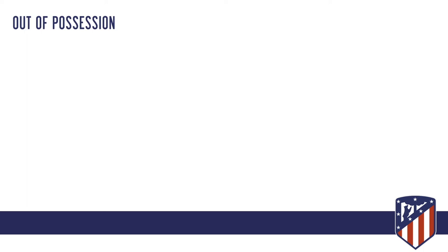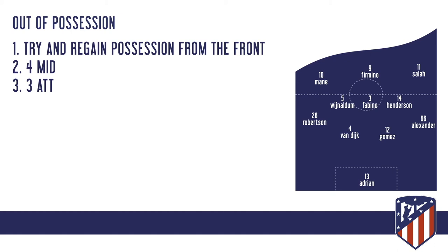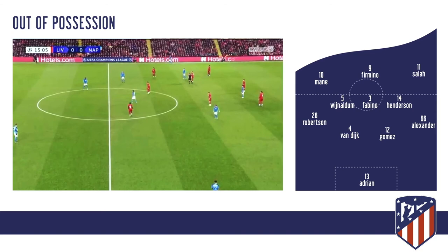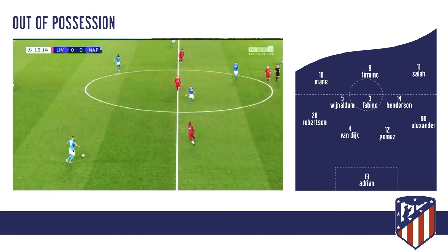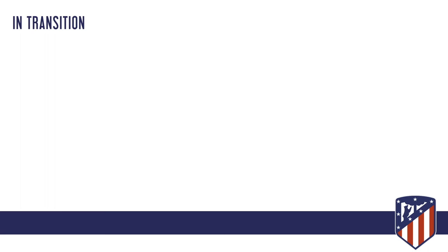Out of possession: when they lose the ball, they try to regain possession using the front three pressing. They drop into a midfield four with one of the full-backs slotting in, and the forward three applies pressure. In this clip against Napoli in the UEFA Champions League, the front three will try a low press. Napoli try to shift the ball across, and Liverpool hold a midfield four with a back three or back four.